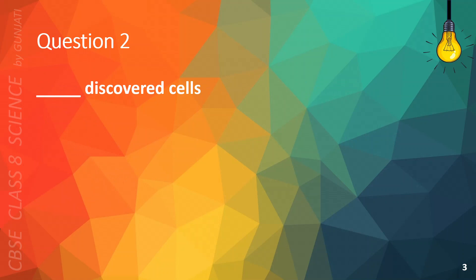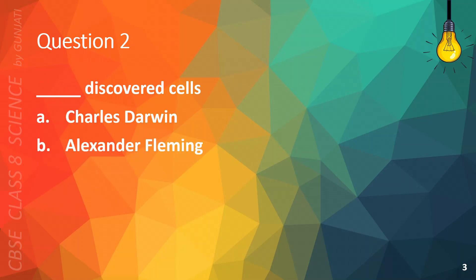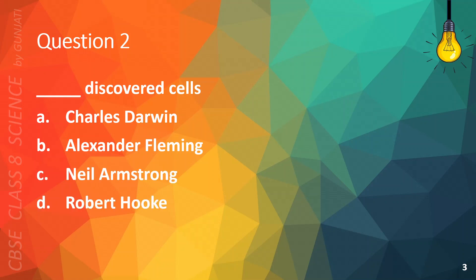Question 2. Blank discovered cells. A. Charles Darwin. B. Alexander Fleming. C. Neil Armstrong. Or D. Robert Hooke. The correct answer is D.